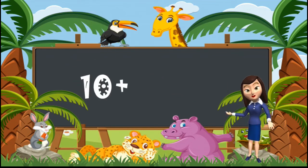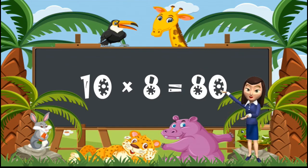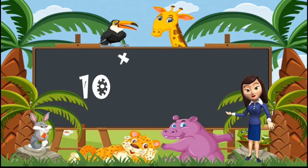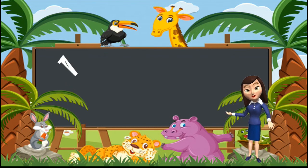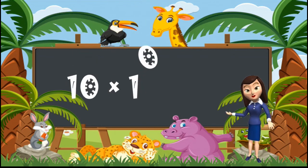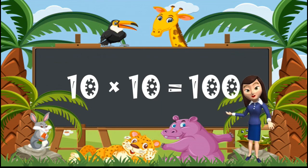10 eights are 80. 10 nines are 90. And 10 tens are 100. So kids, this is the table of 10. Bye kids, we will meet again.